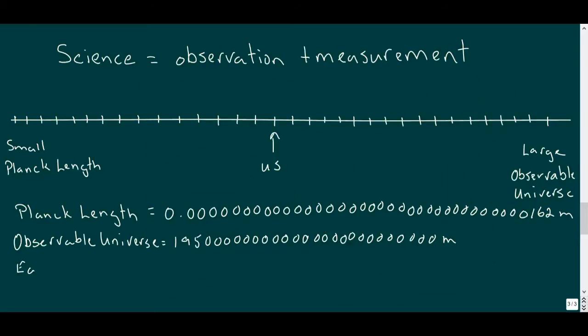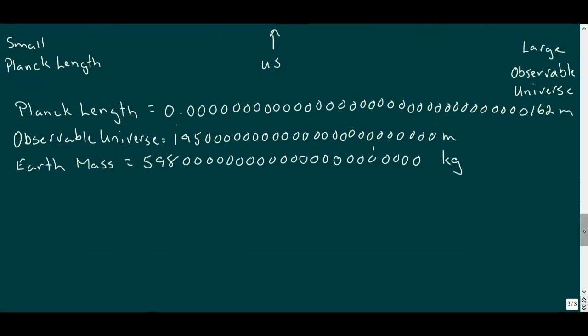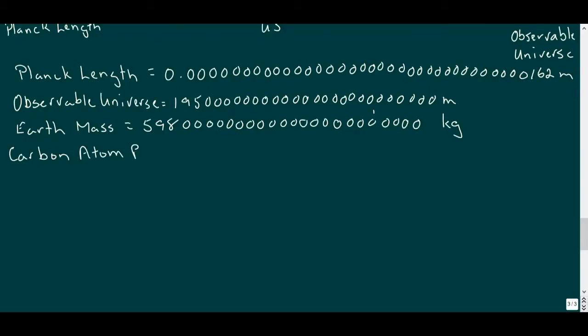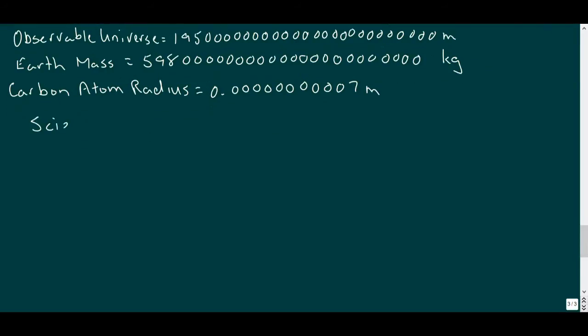A little closer to our experience, but still hard to picture, the Earth's mass in kilograms is 598 followed by 22 zeros, while the atomic radius of carbon, a significant component of life, in meters is written with a decimal followed by 10 zeros and a 7. Well, we need a strategy to deal with this extensive range of numbers.